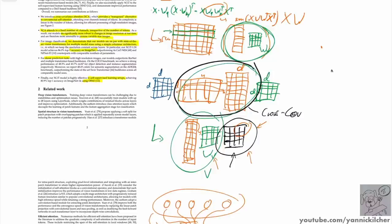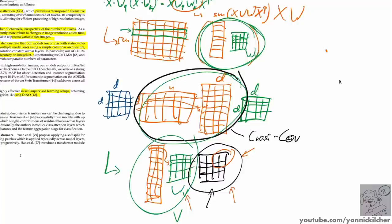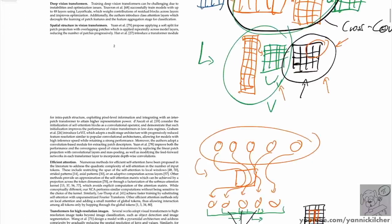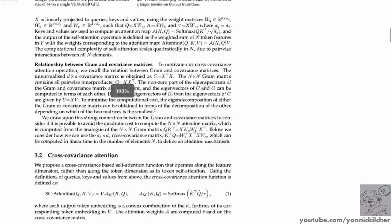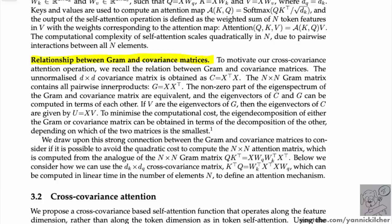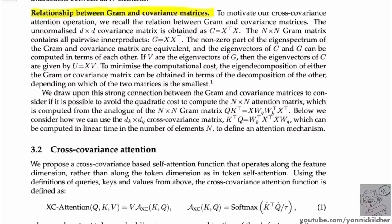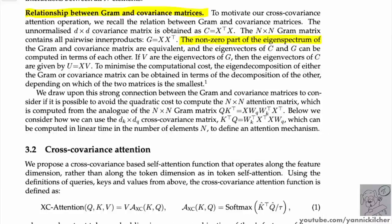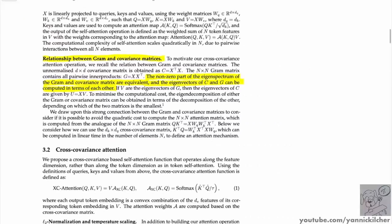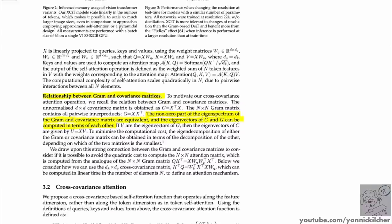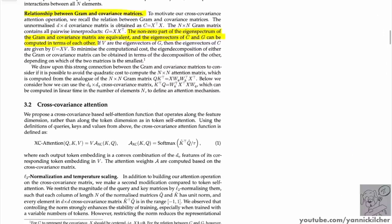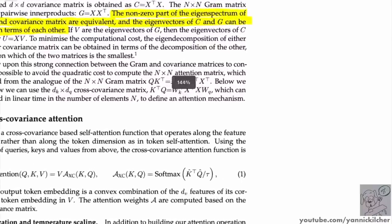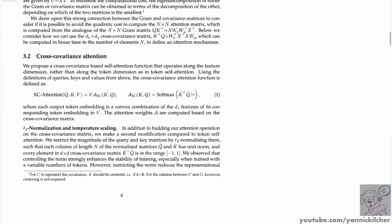This raises more theoretical questions about what's going on. There is an intrinsic connection between the two kinds of attention — the paper discusses the relationship between Gram and covariance matrices. The nonzero parts of the eigenspectrum of the Gram and covariance matrices are equivalent, and eigenvectors can be computed in terms of each other. So there's a deep connection even though conceptually they're very different.